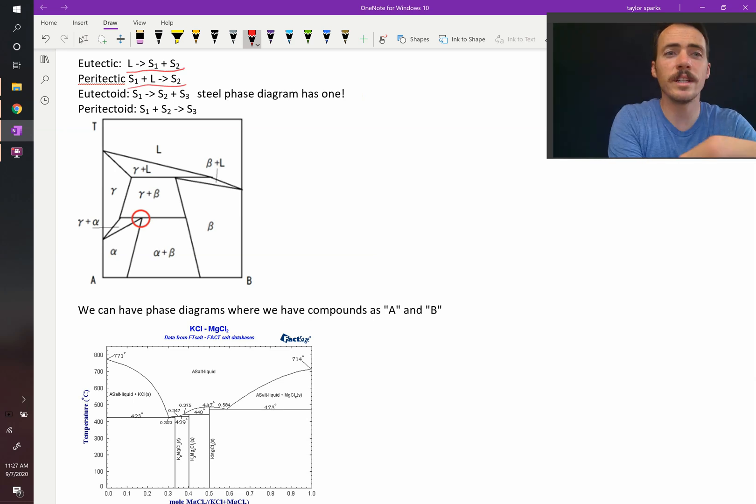A eutectoid is a solid turning into two different solids. And a paratectoid is two solids turning into a third solid.